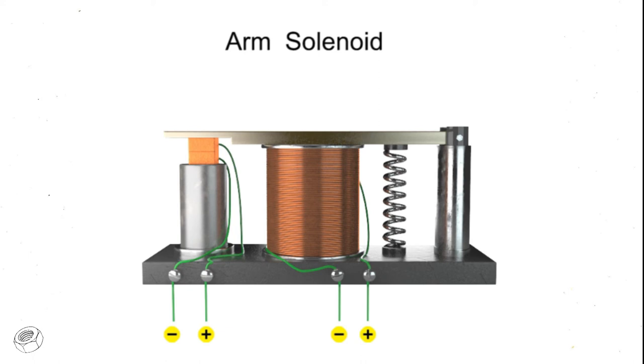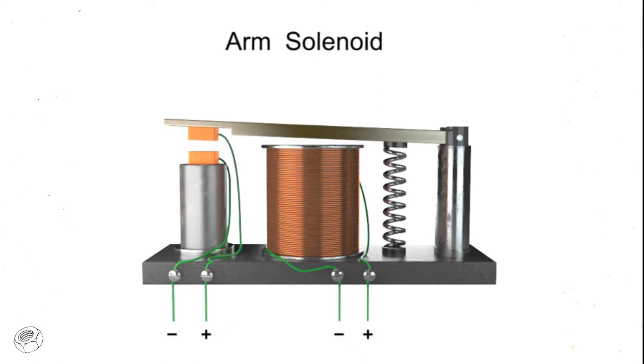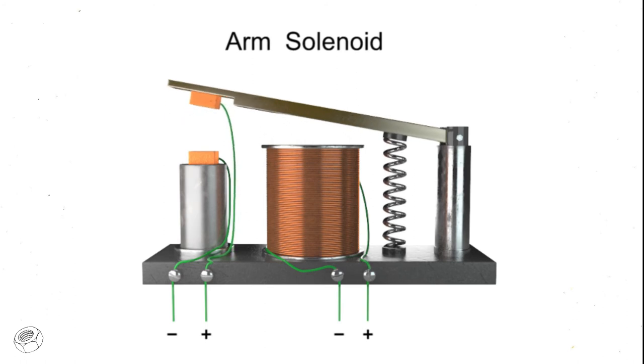When the electrical current to the solenoid is turned off, the magnetic field disappears and the contact is broken as the spring returns to its resting position.